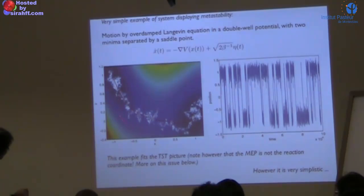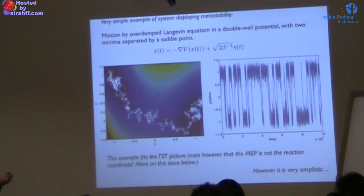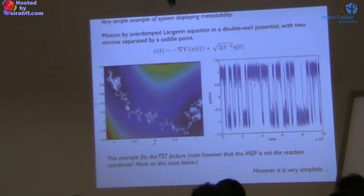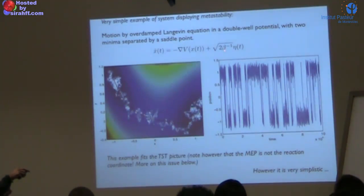If the energy barrier to go from one minimum to the other via the saddle point is much higher than the thermal energy kT, then on short timescales the force dominates and brings the system down toward the nearest minimum, where it hovers for a very long time. Eventually, a sufficiently large fluctuation occurs that pushes the system over the hill — through the separatrix between the two basins of attraction — and it can go to the other side.